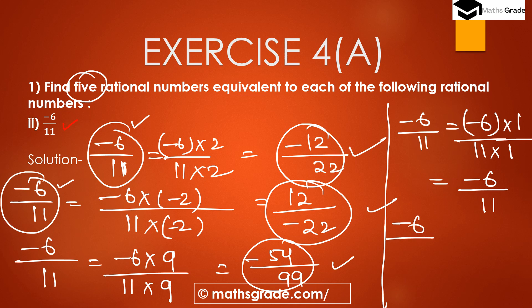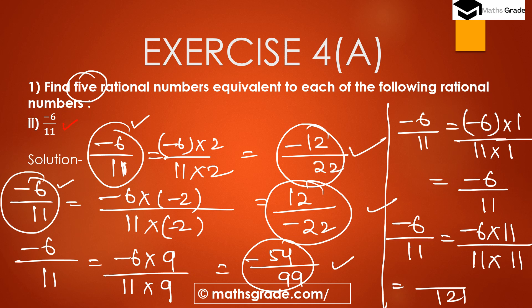For the fifth, multiplying -6/11 by 11: -6×11 = -66 and 11×11 = 121, giving -66/121. So the 5 equivalent rational numbers of -6/11 are: -12/22, 12/(-22), -54/99, -6/11, and -66/121.